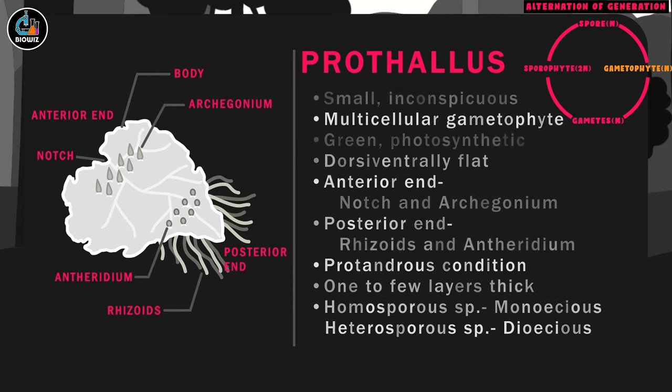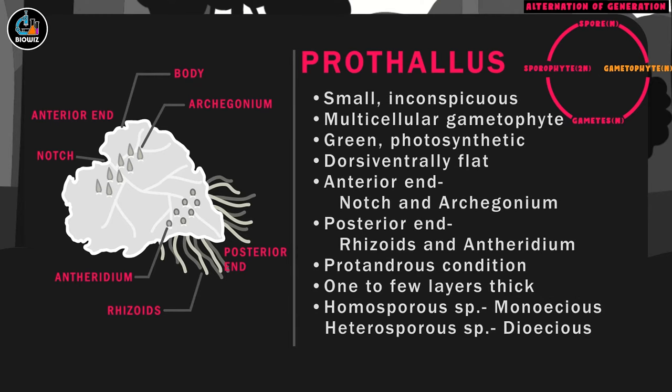The prothallus is a small, inconspicuous and multicellular gametophyte having a dorsi-ventrally flat body. The cells of prothallus contain photosynthetic pigments and thus it is photosynthetic and capable of independent existence. Usually, the prothallus develops into a heart-shaped structure.